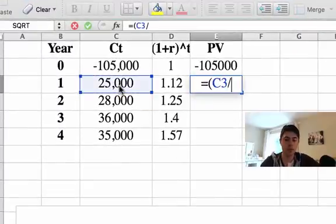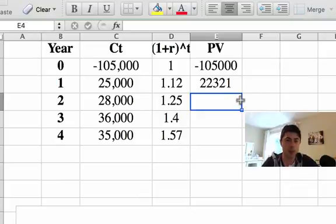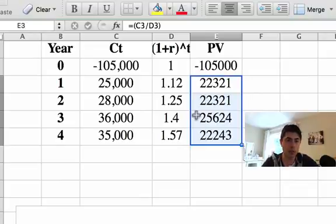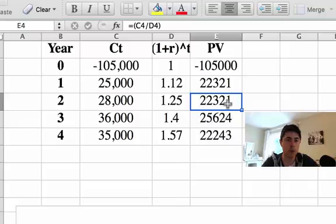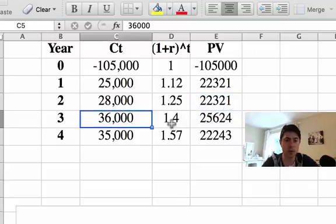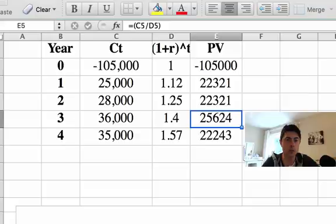And we just repeat that again. 25,000 divided by 1.12 will give us the 22,321. I'm going to drag this down because it's all the same. 28,000 divided by 1.25 also gives us that same figure. Coincidentally, 36,000 divided by 1.4 will give us 25,624. And likewise, the discounted value of 35,000 is just over 22,000.